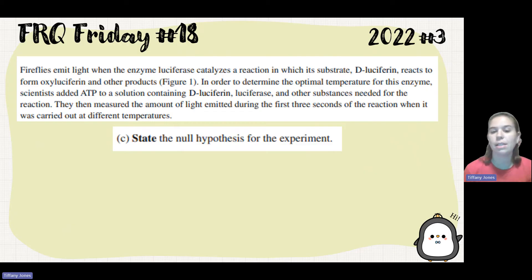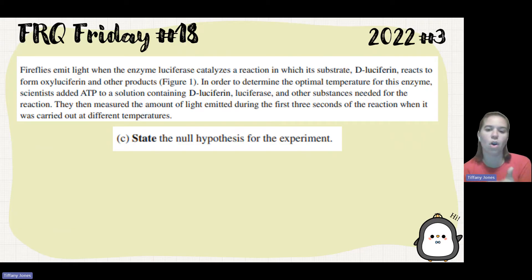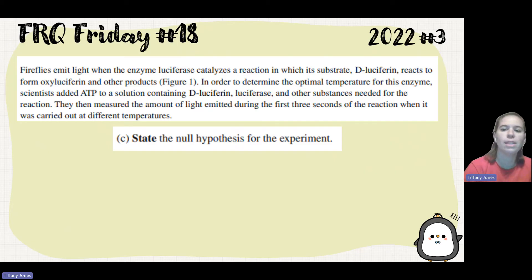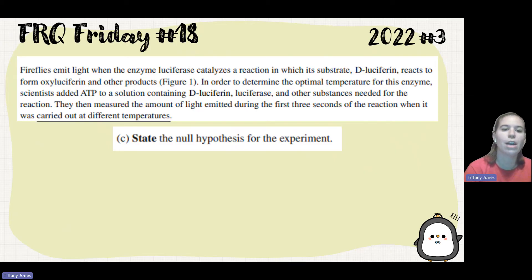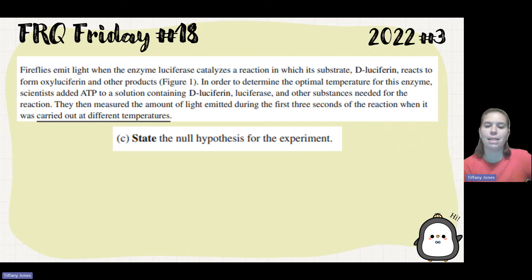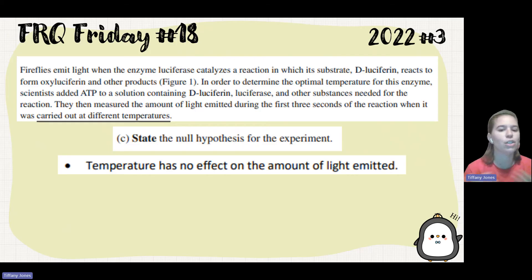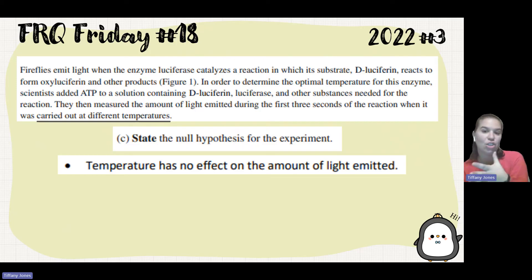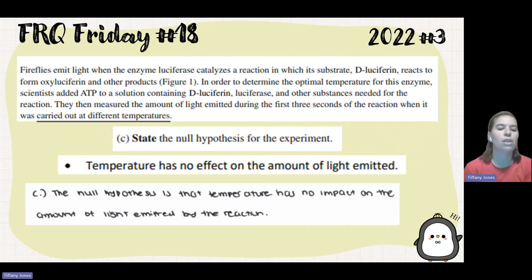Part C says to state the null hypothesis. The null hypothesis is saying that the independent variable has no effect on the reaction. We go back to the prompt to see what was being changed — the light was measured when the reaction was carried out at different temperatures. So the researchers are changing temperature. The null hypothesis is that temperature has no effect on the amount of light emitted by the reaction.